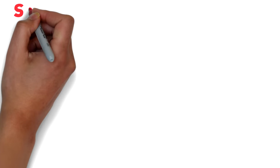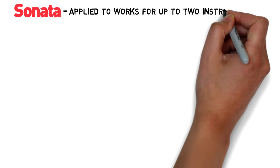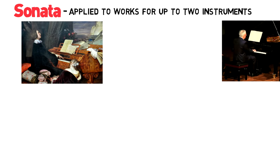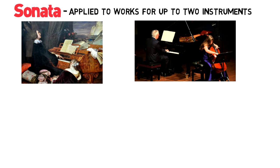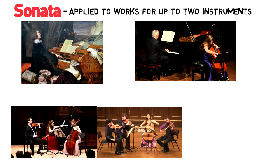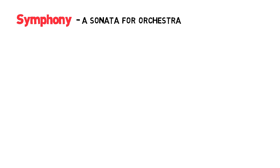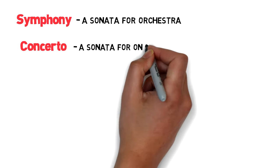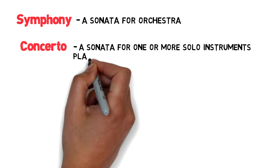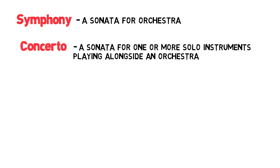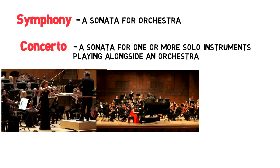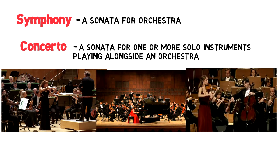For some reason the word sonata is only applied to compositions for up to two instruments, so you'll get a piano sonata or a cello sonata, but when the group expands we start calling them trios, quartets, quintets and so on instead of sonatas. This seems weird because really from the music of Haydn onwards all these pieces are sonatas just for more instruments, and in the same way the symphony is really a sonata for orchestra. The concerto is a sonata for one or more solo instruments playing alongside or against an orchestra, so we get violin concertos, piano concertos, or even double concertos for violin and cello.